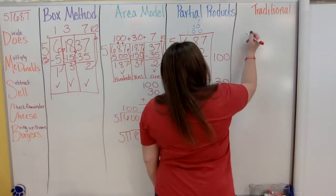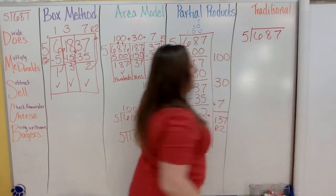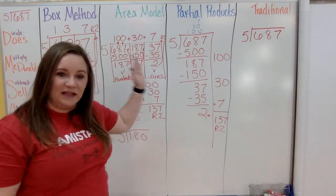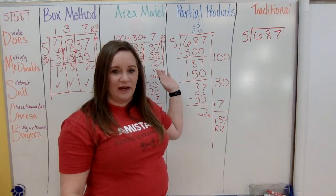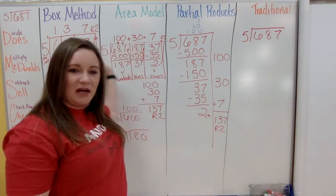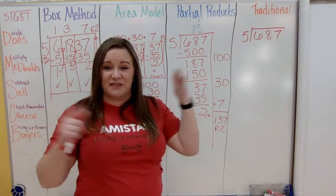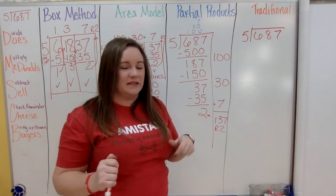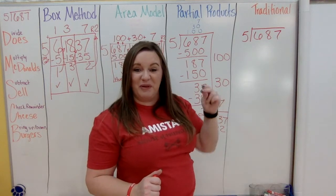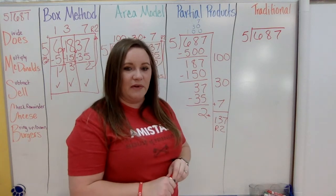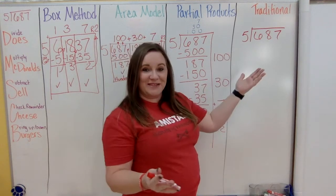The traditional method is the regular way parents are used to. This method combines elements from each of the previous models. The area model builds place value recognition, partial products extends that, and the box method helps kids focus on one small number at a time. As students move through these progressions, they'll pick up the traditional method more quickly because they'll see it combines elements of each.